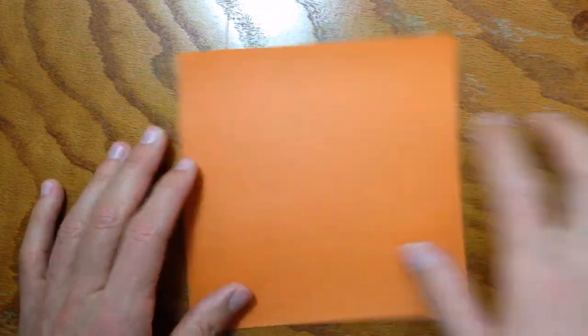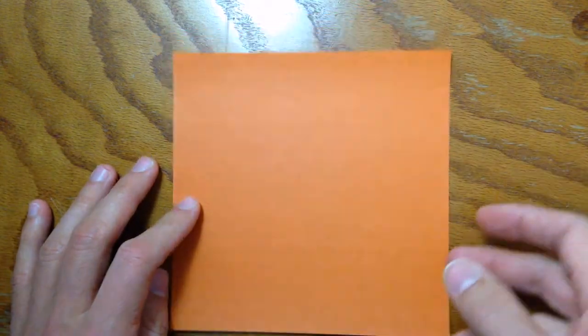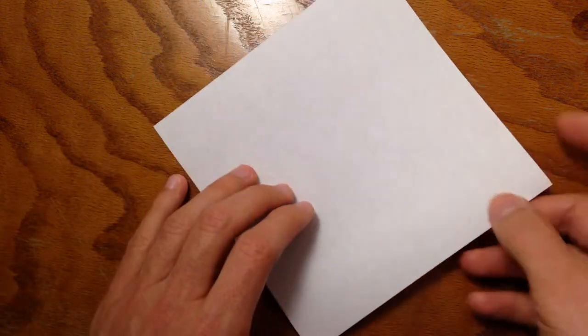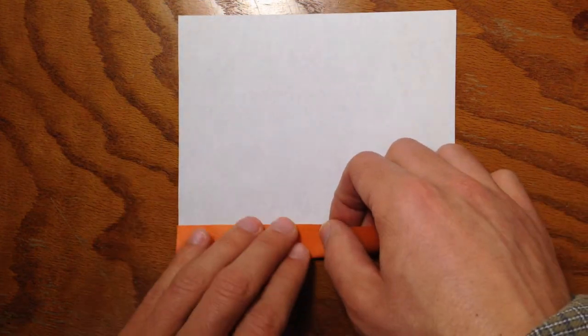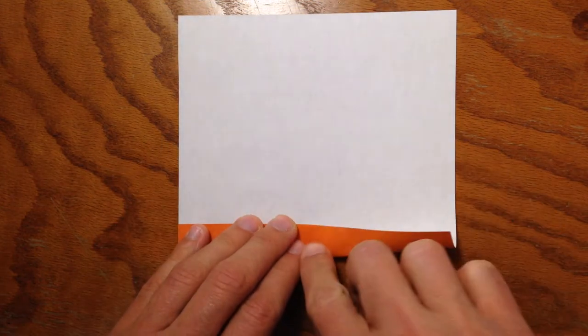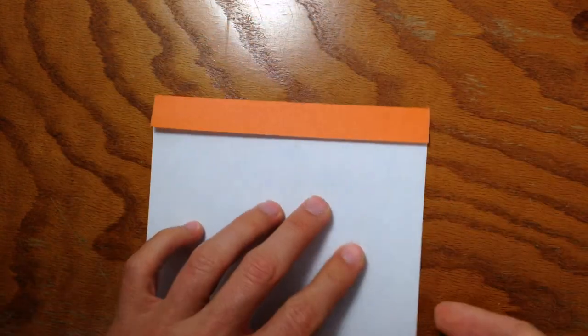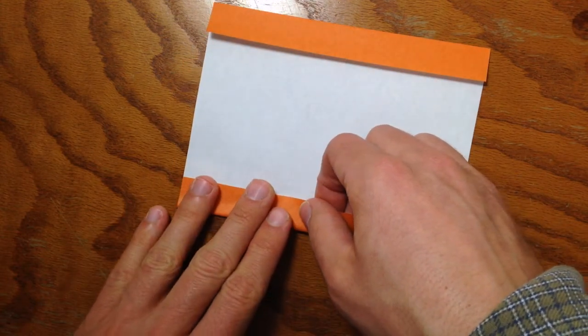You're going to begin with your piece of square paper. For demonstration purposes, I'm using the basic 15 by 15 centimeter square. You want to begin by facing the color downwards. Let's take one side in about 2 or 3 centimeters, and do the same for the other.